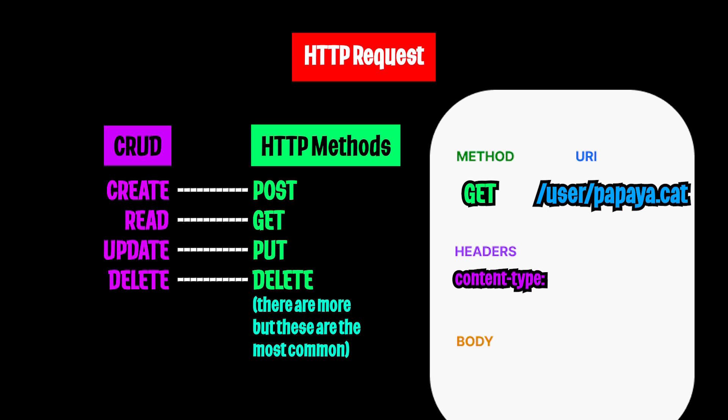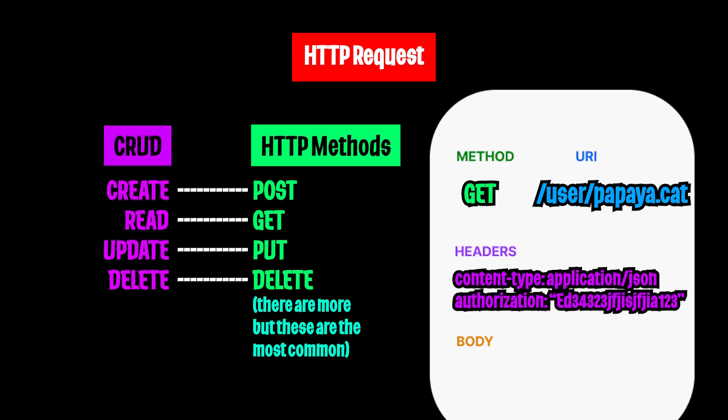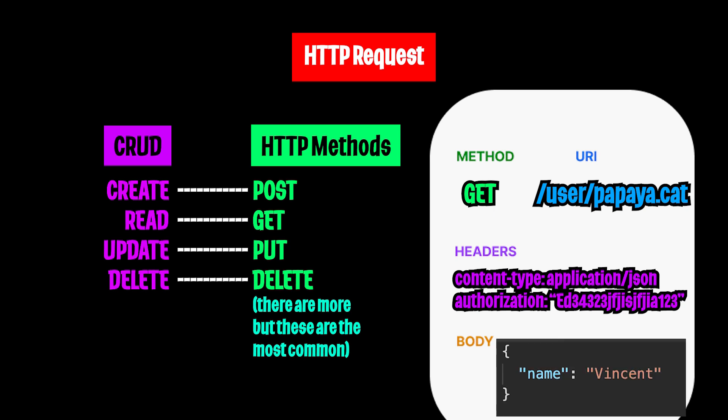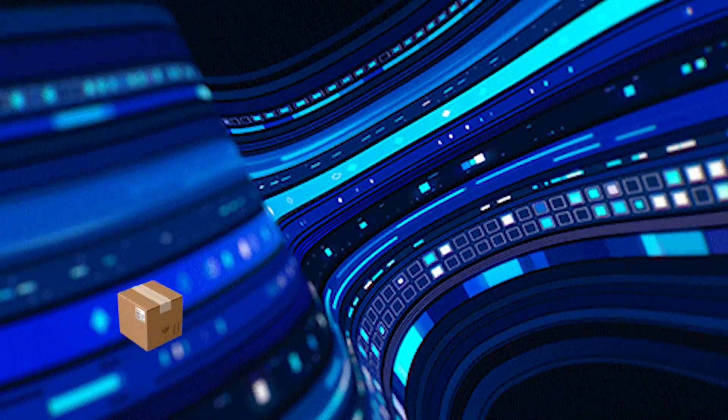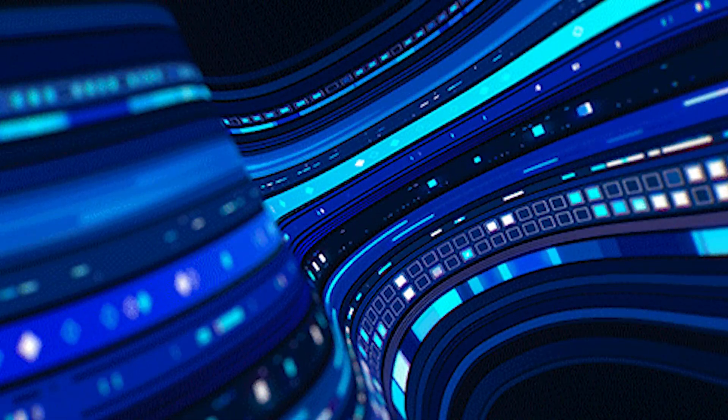Next, we have the header, which provides the metadata for the request. So you can specify the type of data you want, you can provide an authorization token so that the server knows who you are, and etc. And finally, we have the body, where you can provide extra information for the request. And once everything is ready, the request will be sent to the server through IP packets.